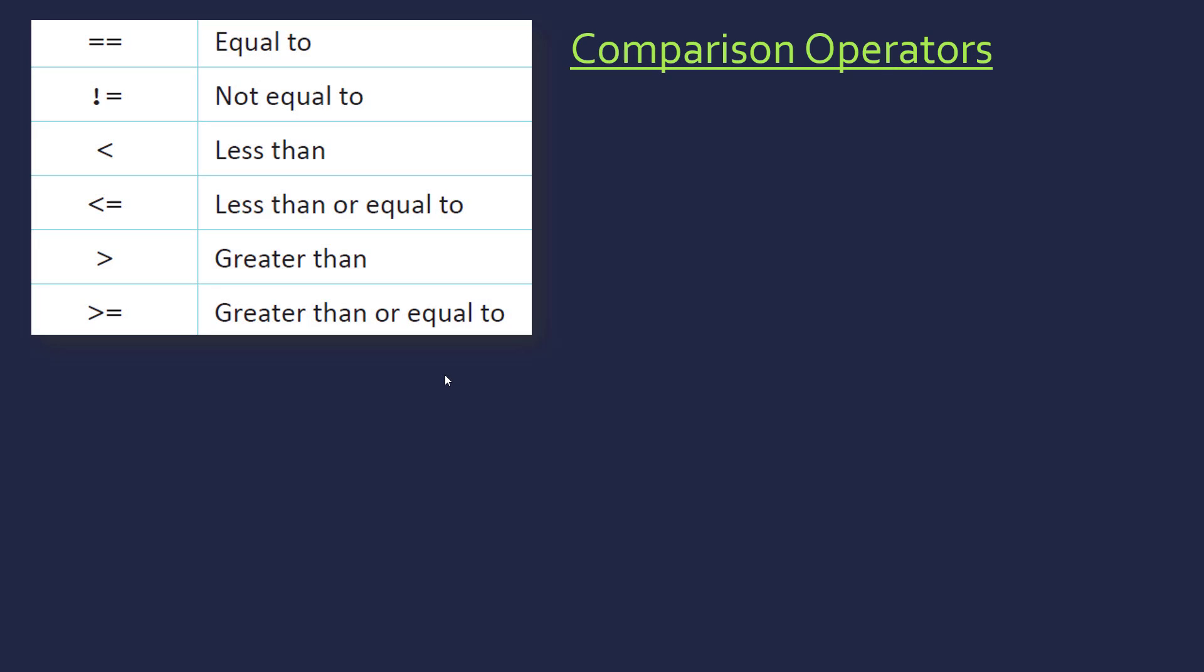We're just looking at operators here, so operators you'd use in a programming language. First of all, we have comparison operators, which evaluate to a Boolean value.